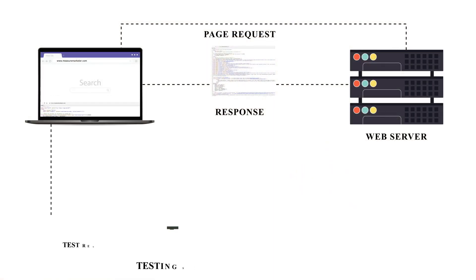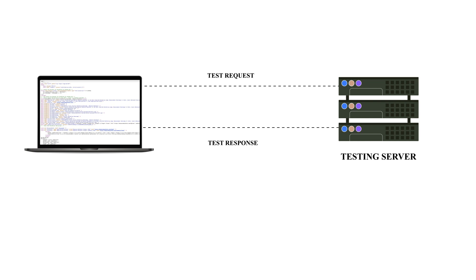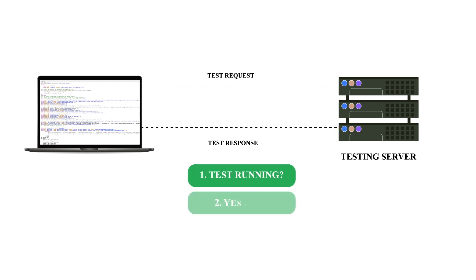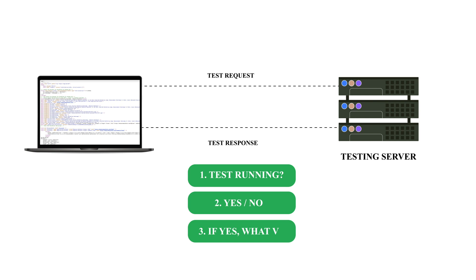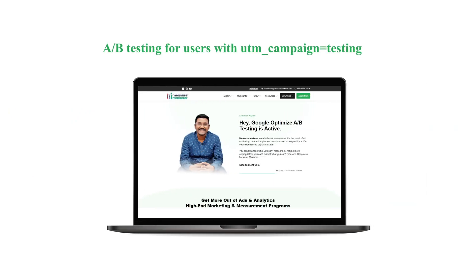Tracking and measurement sits here — at the browser — because it is the browser that interprets the code, and when it reads that code it makes a request to something called the testing server where we have set up our A/B testing. So when the user makes a request to the server and the server responds with code, as the browser starts interpreting that code it comes across an A/B testing script. The browser then makes a request to the testing server asking: is there any A/B testing running? If yes, which variant? The testing server provides the variant along with the code changes to be applied.